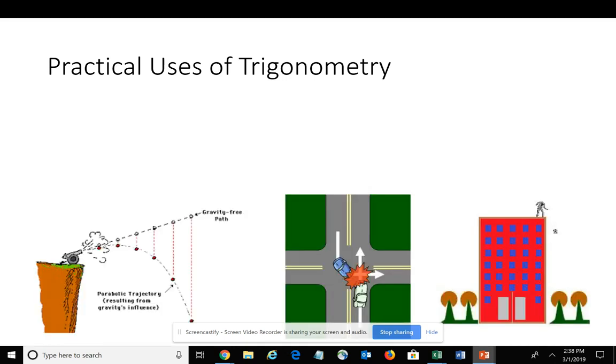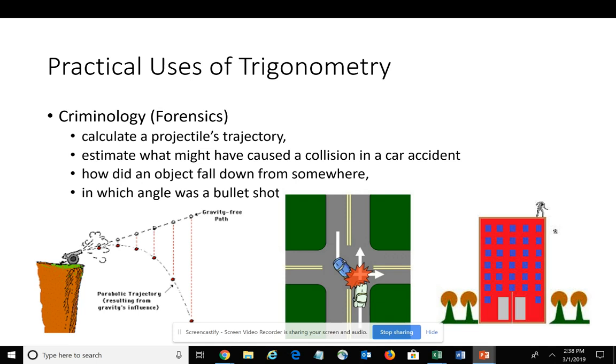Also, we use trigonometry in criminology within forensics to look at calculated projectile trajectory, whether that's a bullet or an arrow or some sort of ball. You can calculate its trajectory using trigonometry. You can estimate the speed that might have caused a collision in a car accident by looking at the angles at which the cars come to rest and their location.